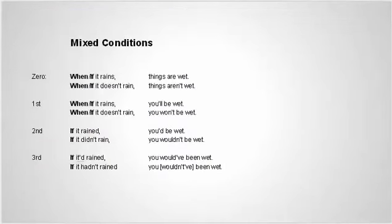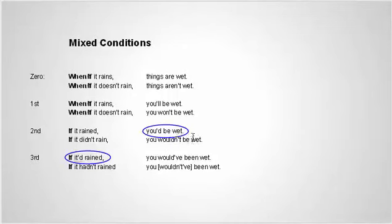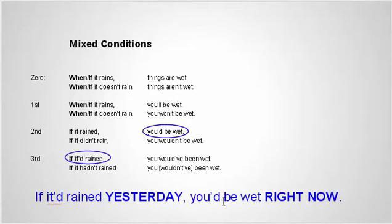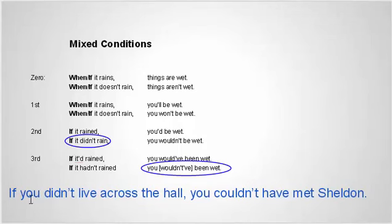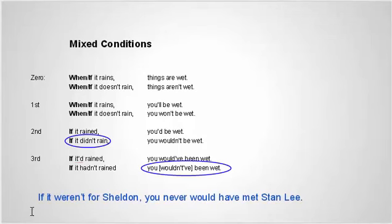Let's talk about mixed conditions. You can mix the third condition if-clause with the second condition result clause into one sentence. For example: 'If it had rained yesterday, you'd be wet right now.' Here's the opposite: 'If you didn't live across the hall, you couldn't have met Sheldon.' You lived here for a long time up to now — if you didn't live across the hall, you couldn't have met Sheldon. Another example: 'If it weren't for him, you wouldn't have met Stan Lee.' When we look at this — it's not just the past, it's right now, but we include now with the past. If it weren't for now and the past...